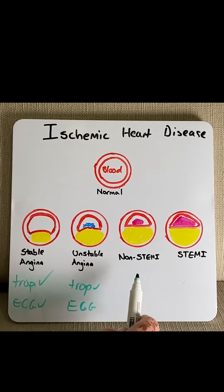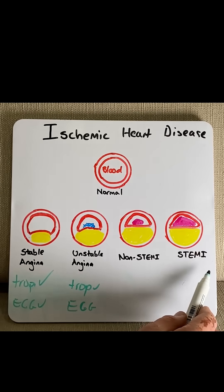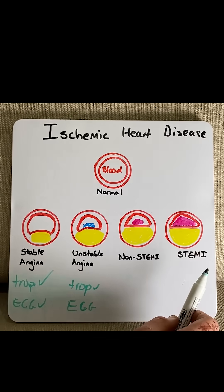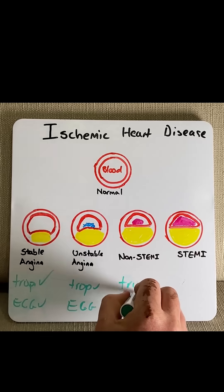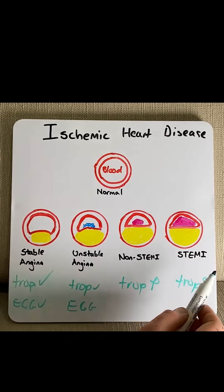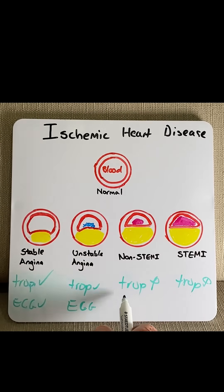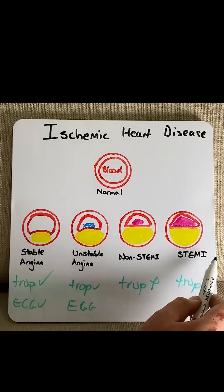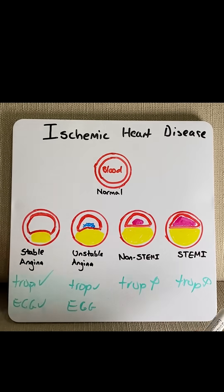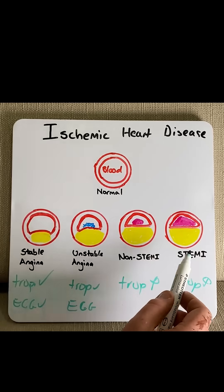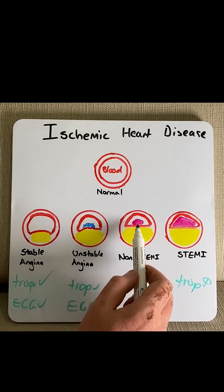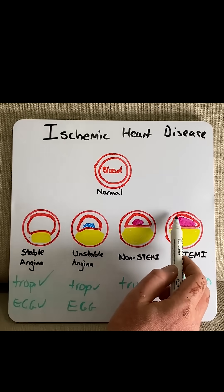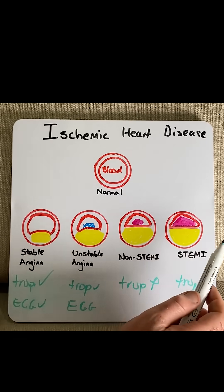The next two are known as myocardial infarction, which means there will be necrosis of the heart muscle. Therefore by definition we will see troponin increase. The difference between these two is the ECG changes: in a NSTEMI it would be ST depression or T wave inversion, whereas in a STEMI it is ST elevation. The reason they differ is that in a NSTEMI the thrombus allows some blood flow through, whereas in a STEMI the vessel is usually completely occluded.